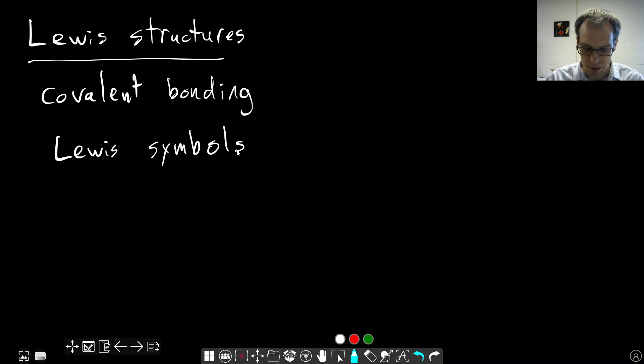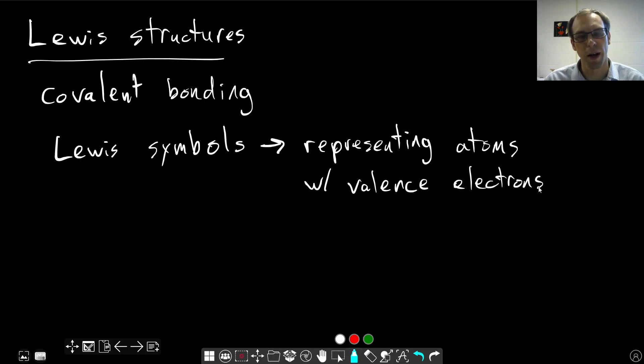So the first thing is Lewis symbols are a way of representing atoms, and specifically, representing the valence electrons. Because in chemistry, it's really those valence electrons are the only thing that matters when we're thinking about bonding. The core electrons in an atom don't really affect how the bonding occurs. They're just sort of hang out next to the nucleus, but don't actually affect bonding.